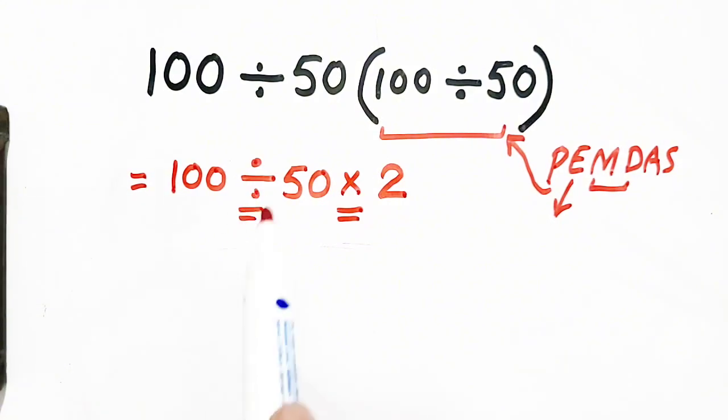So, first of all, we have to solve this division because it is at left, and according to PEMDAS, we will solve division first because we have to move from left to right. Division is at left.